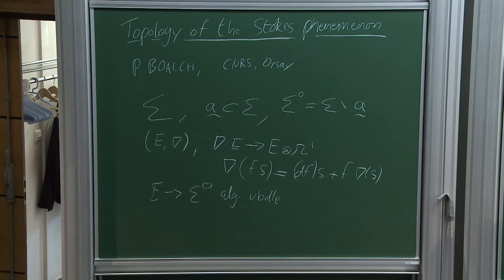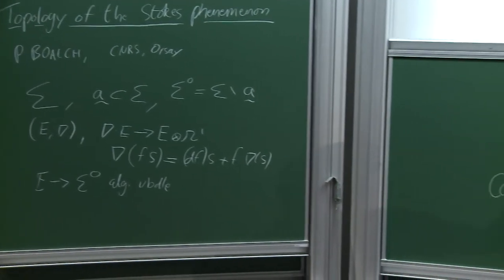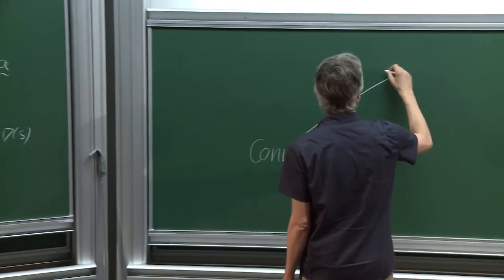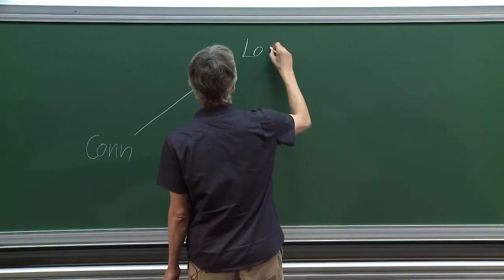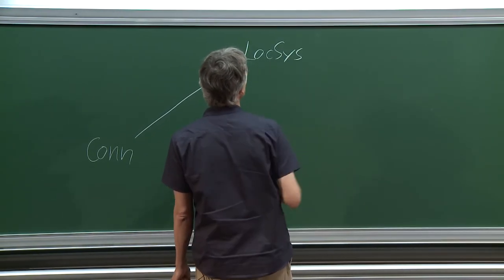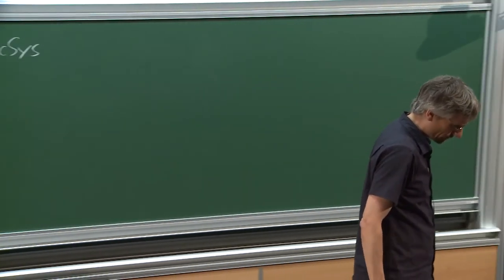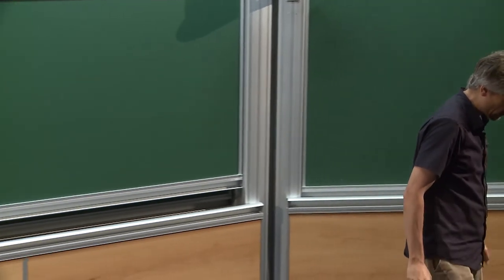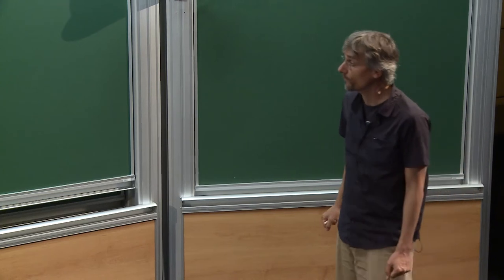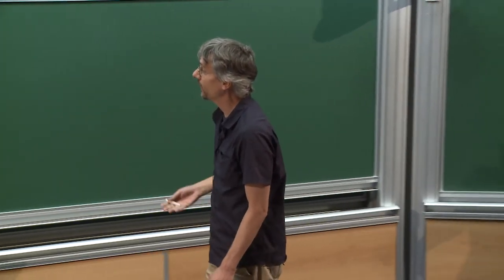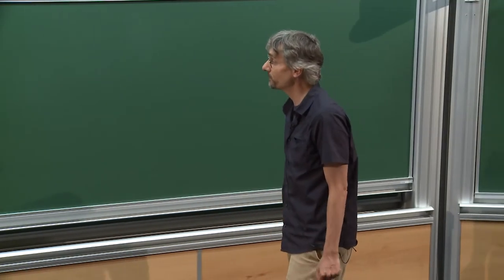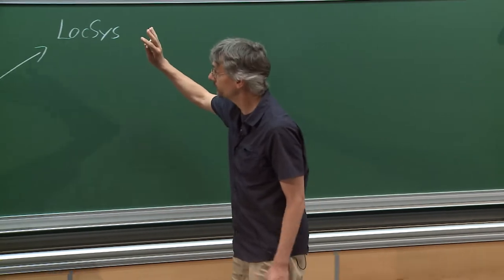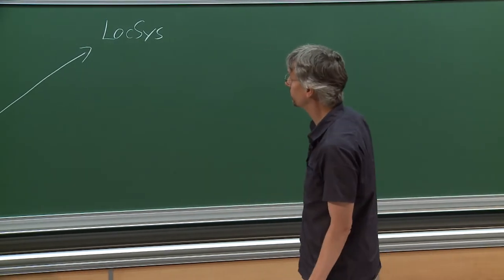The first piece of topological data is the local system of solutions. We can define a functor to the category of local systems — locally constant sheaves of finite-dimensional complex vector spaces — and if we choose a base point, this is equivalent to the category of representations of the fundamental group of the curve. This is quite simple and purely topological.